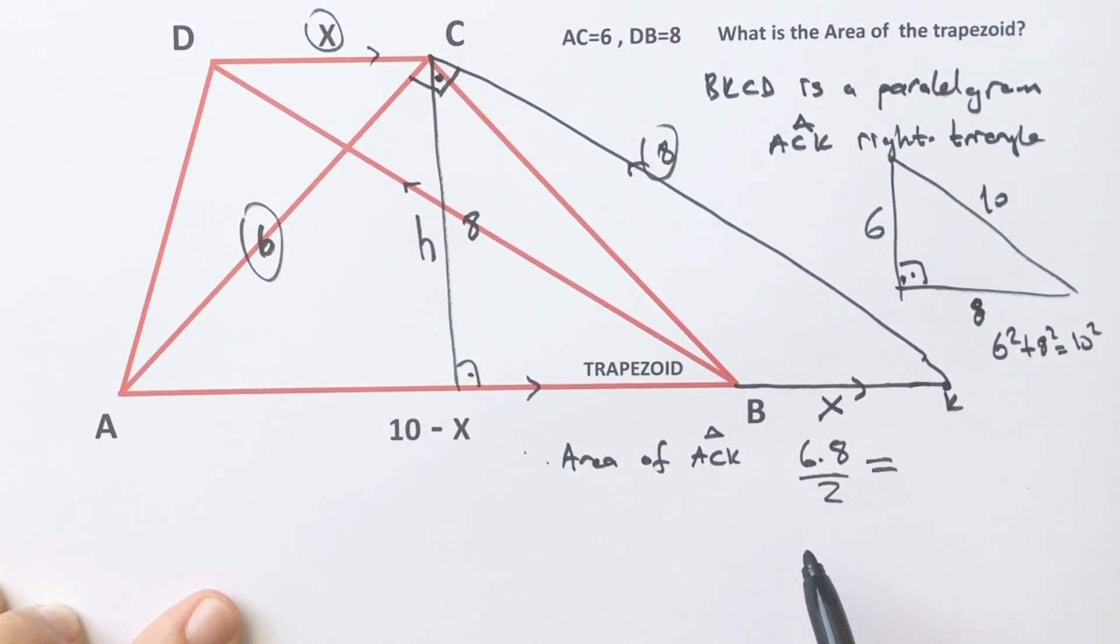We can calculate the area of ACK triangle using the other way: 6 times 8 over 2 equals h times 10 over 2. These cancel, giving us h times 10 equals 48, so h equals 24 over 5.